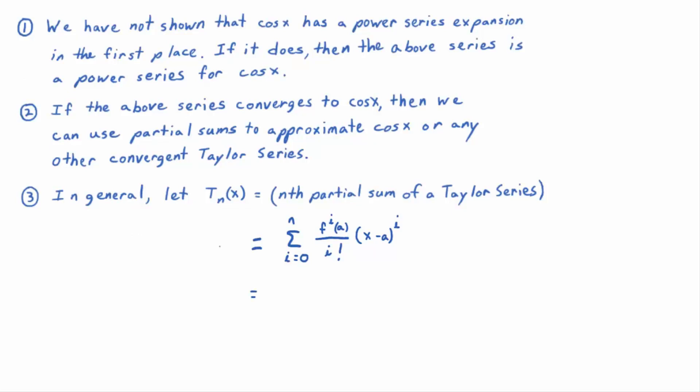The first term, if you write it out longhand, would look just like how we wrote it earlier, except you stop at the nth term. It would be f(a) plus f'(a) times (x - a), plus f''(a) times (x - a) squared divided by 2 factorial, plus dot dot dot, plus the nth derivative evaluated at a over n factorial times (x - a) to the n. You stop it there, and you could use that polynomial to estimate, say, the cosine of x.